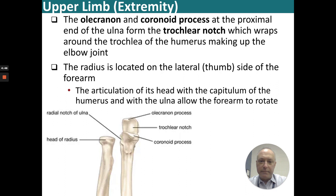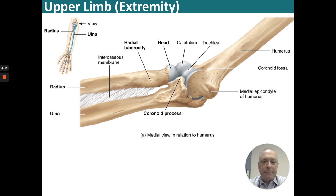Here we see the ulna with its olecranon process, the trochlear notch, and the coronoid process. Of the radius, we have the head of the radius — these are the proximal ends that articulate with the humerus. The humerus goes distally with the trochlea articulating with the coronoid process, and the capitulum articulating with the head of the radius. The interosseous membrane can be seen holding those two bones together.